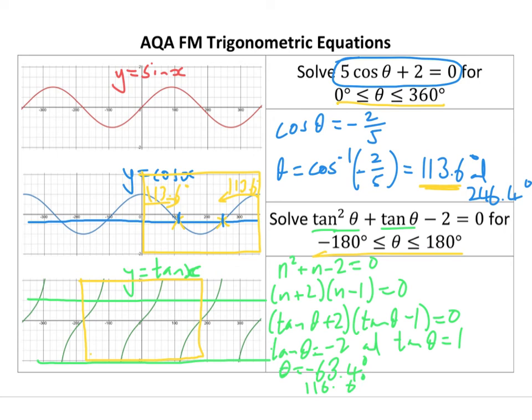And for tan theta equals 1, I should have minus 135 and 45. Okay, so I've got four solutions for that.